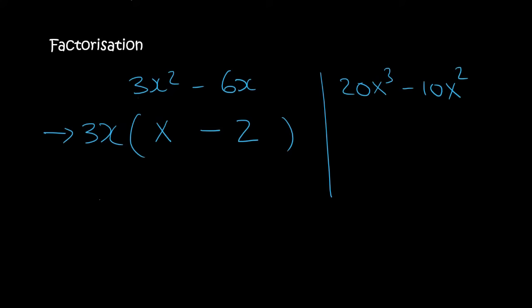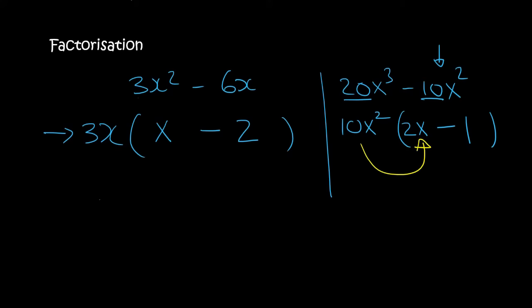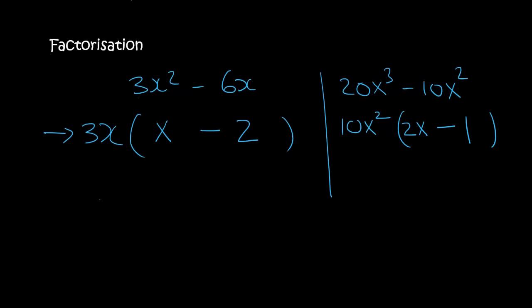With this next one, the biggest number they have in common is 10. They have two x's in common. Then, what will be left? For the first term, you would still be left with a 2 and one more x left over. With the second term, there's nothing left over so you just say minus 1. If you multiply this back, that would give you 20x cubed minus 10x squared, which is what we originally had.